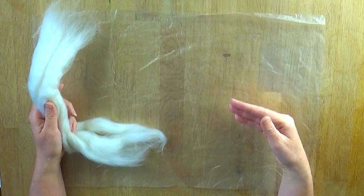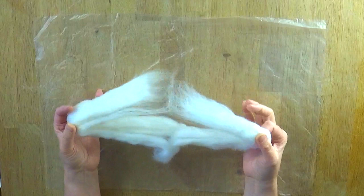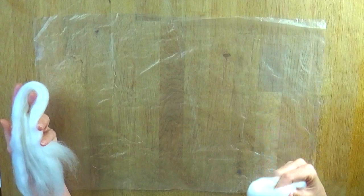As before, we're going to do two layers. If you can pull your white wool into two sections, one is going to be the layer left to right and the other layer is going to be the opposite direction. Off you go.